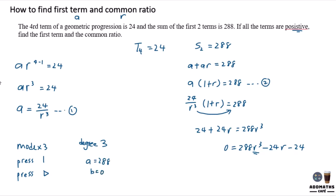B is 0, C is negative 24, and D is negative 24. So in this case, if you press everything in,